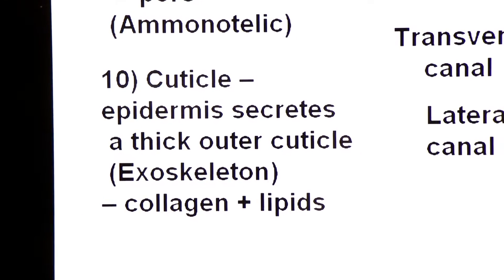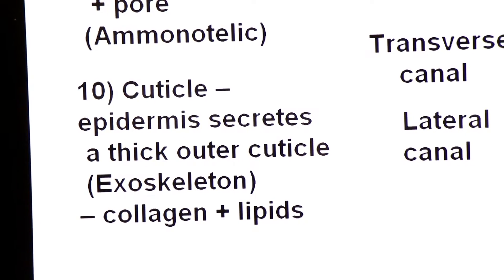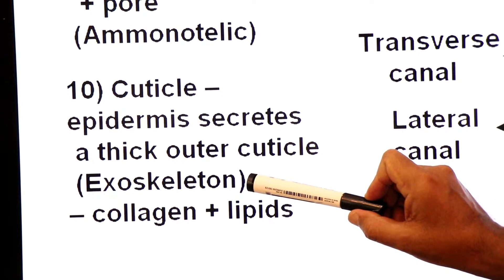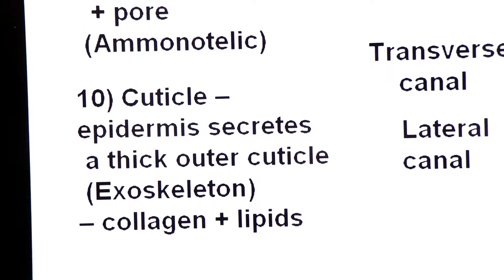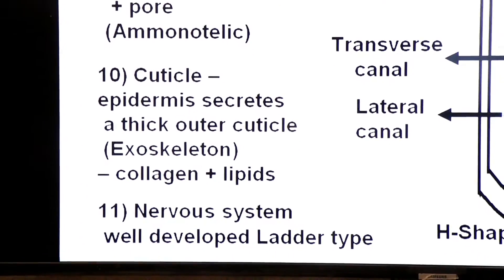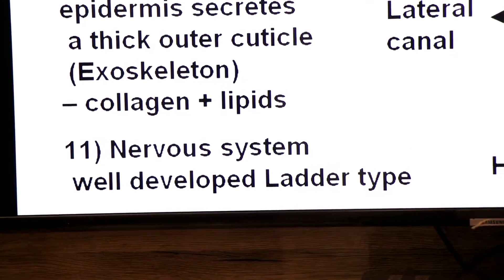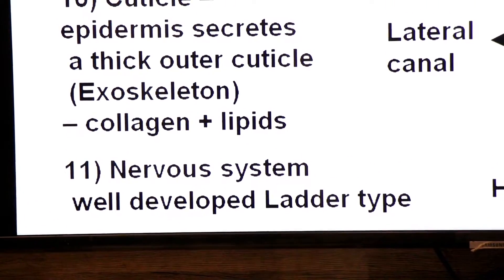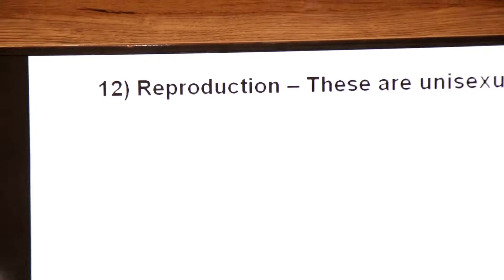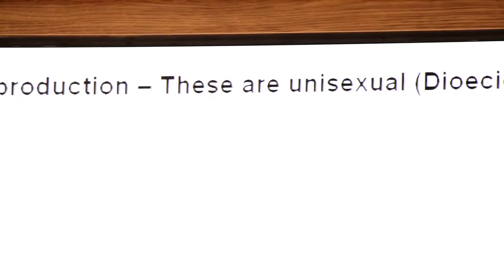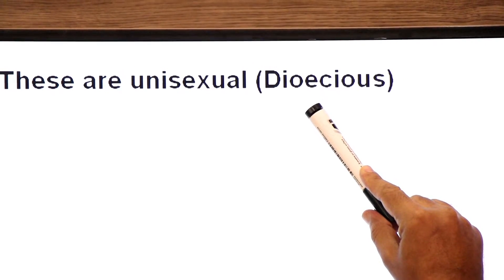Cuticle: their epidermis secretes a thick cuticle for protection, known as an exoskeleton, made up of collagen protein plus lipids. Nervous system: they have a well-developed nervous system whose shape is ladder-like, so their nervous system is called a ladder-like nervous system.